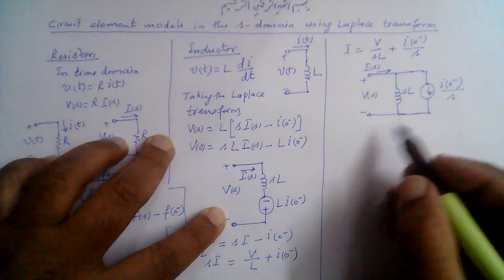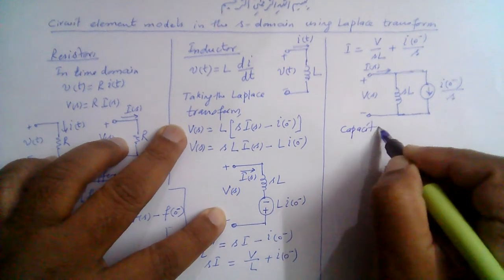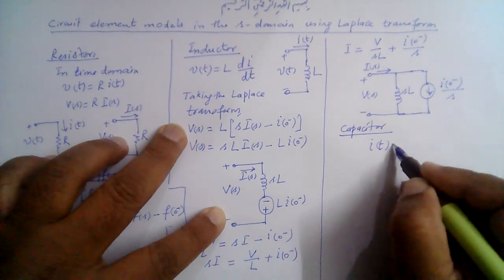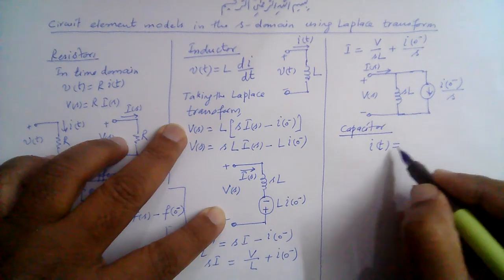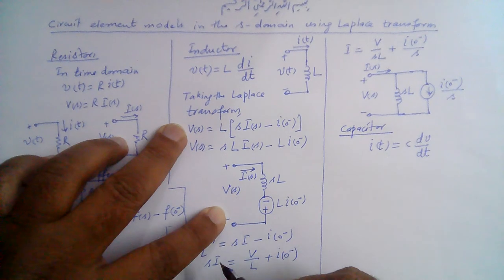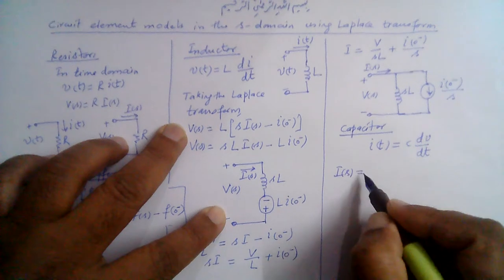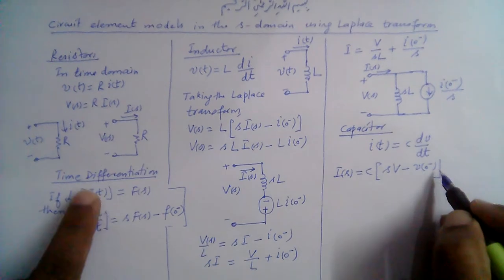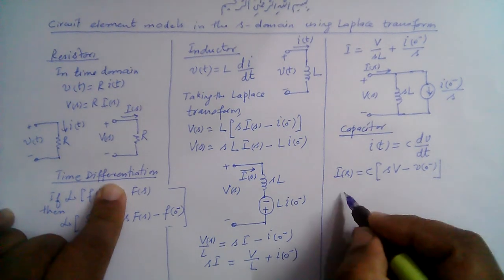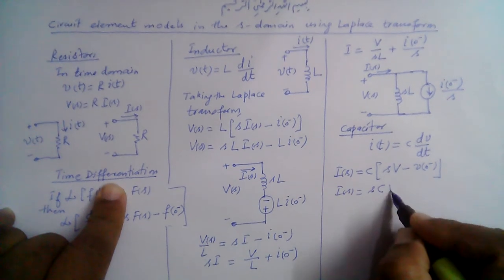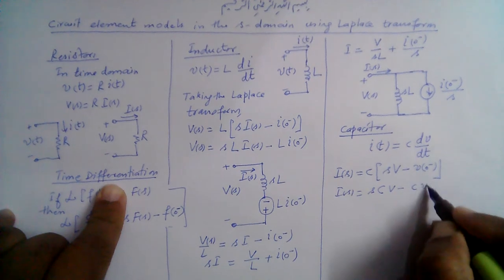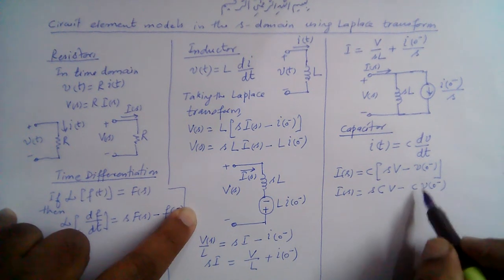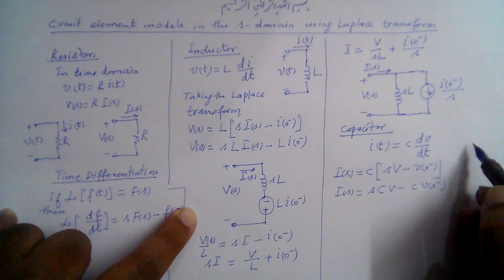Likewise, for the capacitor, the relationship between current and voltage in the time domain is I = C·dV/dt. Applying the Laplace transform using the time differentiation property gives I(s) = C[s·V(s) − V(0⁻)], which equals s·C·V(s) − C·V(0⁻).